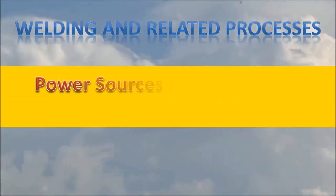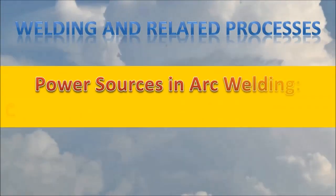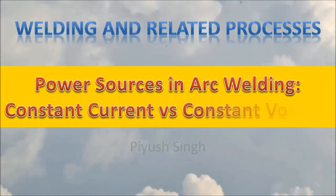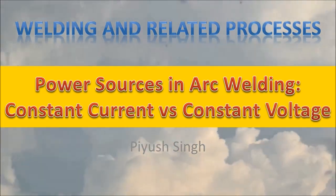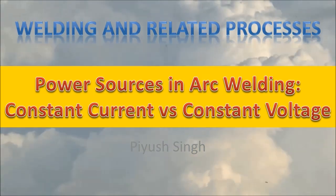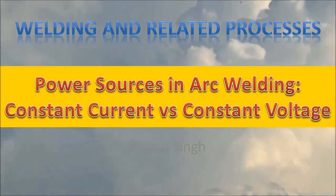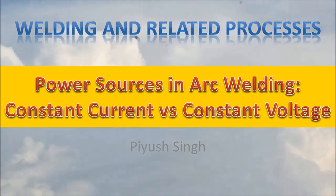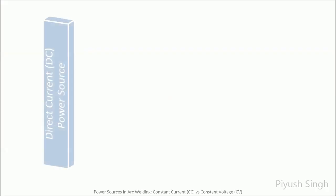In this video, I will be discussing the conventional constant current and constant voltage power sources, elaborating their characteristics, differences, and applications. For a description of the two polarities in DC power sources and their comparison with AC power sources, watch my previous video — link is in the top right corner and also in the description below.